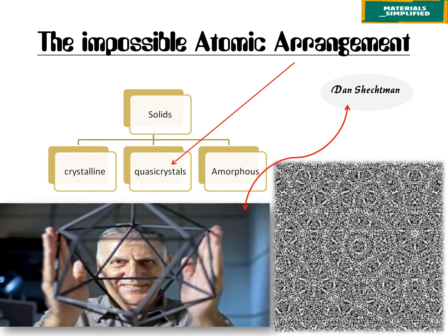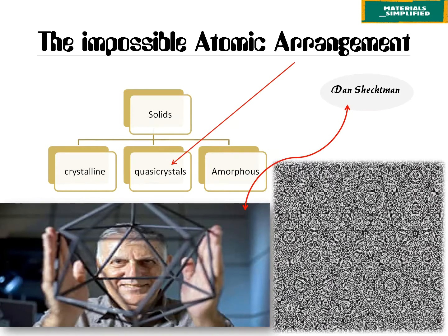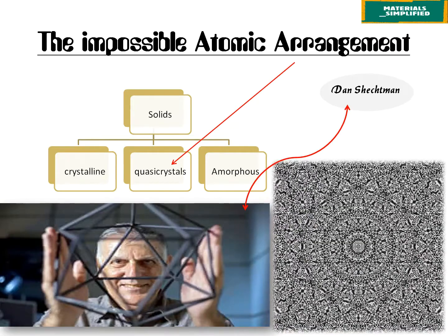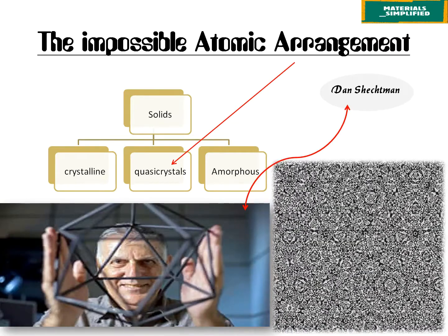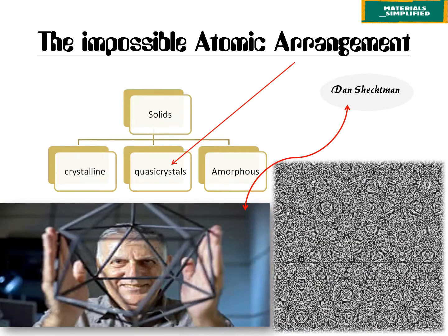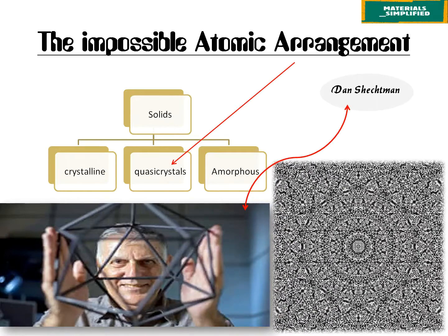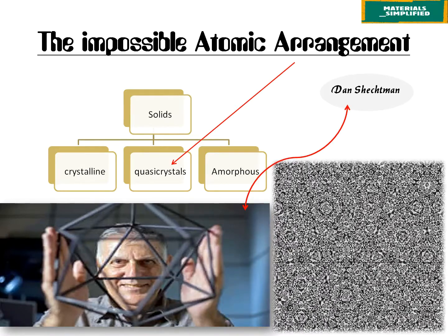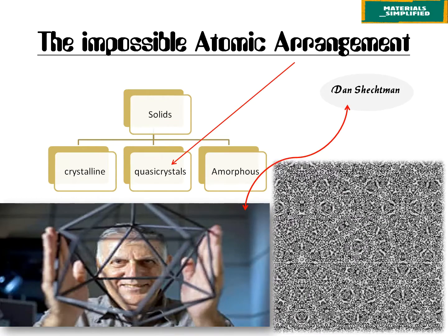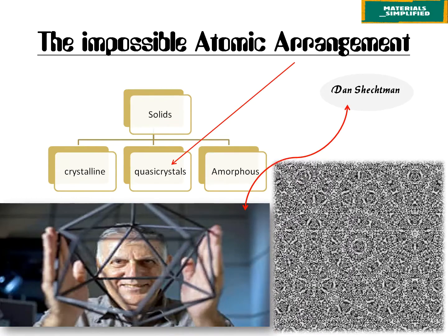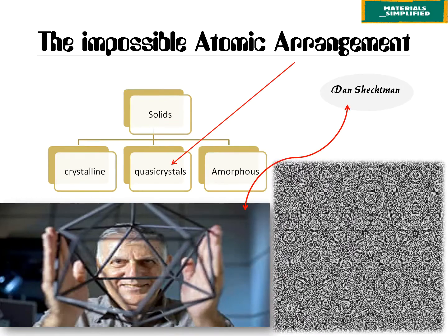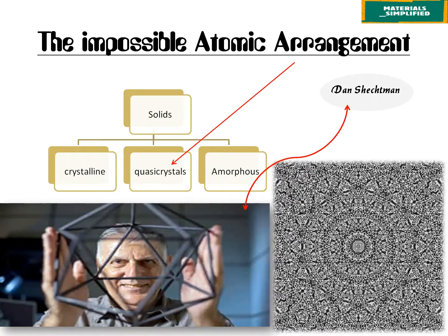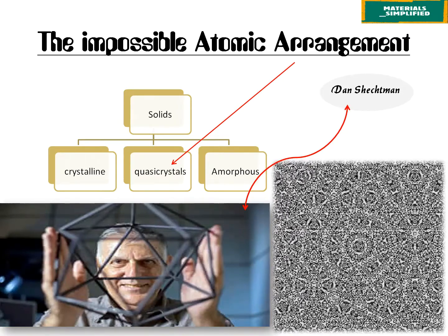The impossible atomic arrangement was discovered by Dan Shechtman in 1982. Here we have an image of Dan Shechtman holding his so-called discovery — the impossible atomic arrangement, which is also known as quasicrystals.